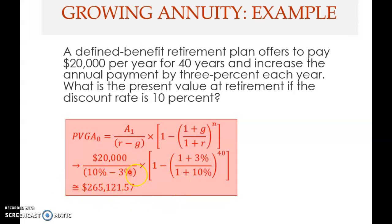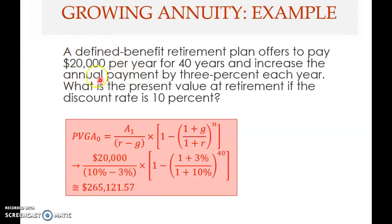This means that if you have $265,121.57 today invested at 10% per year, you can start withdrawing $20,000 in the first year, increase each withdrawal by 3% annually, and keep doing that for 40 years. By the end of the 40th year the savings will be completely exhausted — that is what this growing annuity example represents.